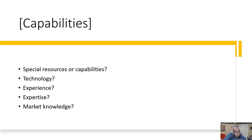Next, you want to discuss the capabilities of the Urban Entrepreneur Partner to give the audience the impression that the people who run this business are capable. What are the special resources or capabilities this business possesses — in terms of technology, staff experience, expertise, market knowledge, and those kinds of things?